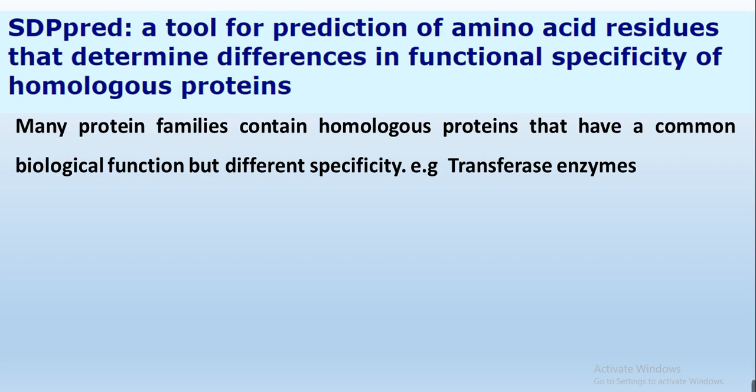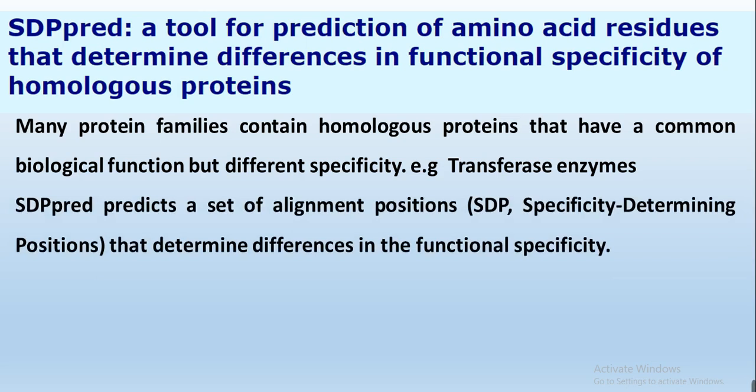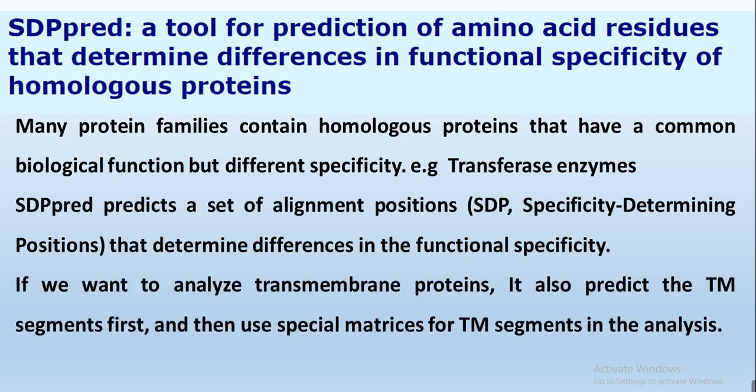To identify which residues or amino acids are important to differentiate substrate specificity, we use SDP pred. SDP pred predicts a set of alignment positions — specificity determining positions — that determine differences in functional specificity, identifying which amino acid is specific to which substrate. It also identifies amino acids within the family responsible for transmembrane segments, so we can predict which amino acids are responsible for transmembrane segments within our gene family.